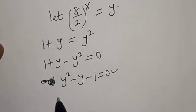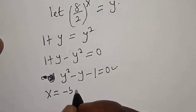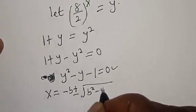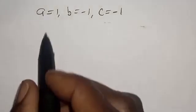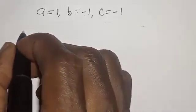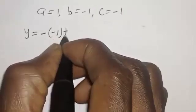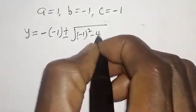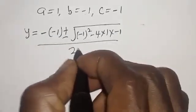Let's solve this using the quadratic general formula. The quadratic general formula is y equal to minus b plus or minus square root of b squared minus 4ac, over 2a. Now a is equal to 1, b is equal to minus 1, and c is equal to minus 1. Then y equals minus into minus 1 plus or minus square root of minus 1 squared minus 4 multiplied by 1 multiplied by minus 1, over 2 multiplied by 1.